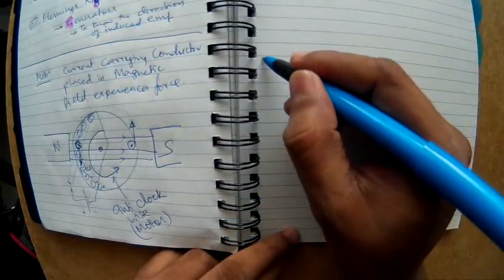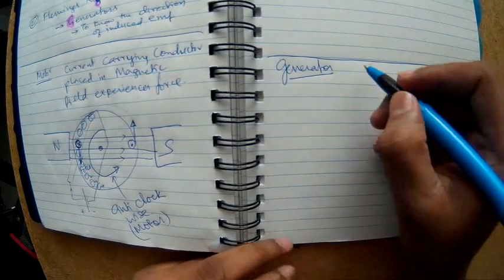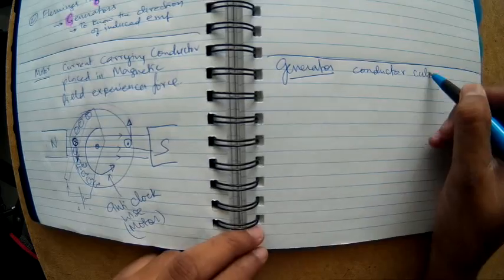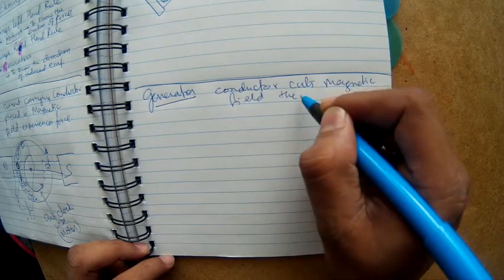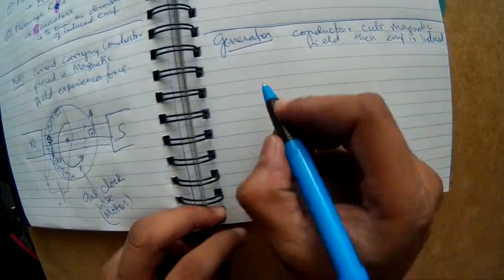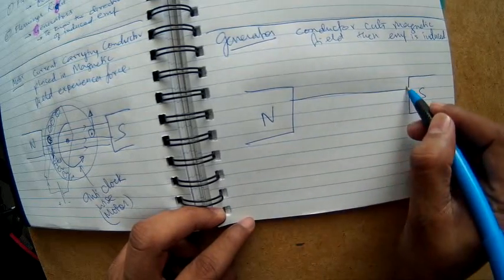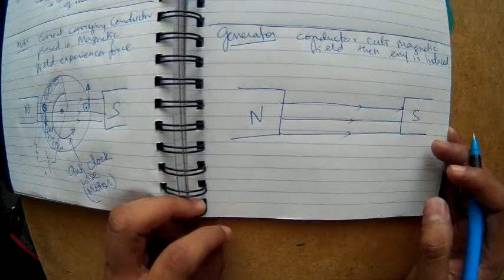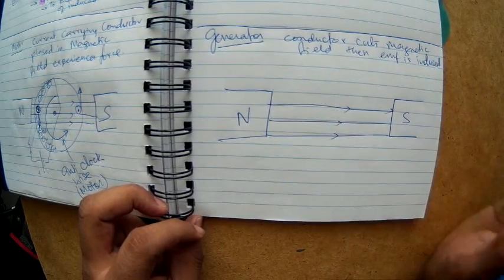Now let's look at the generator. In a generator, a conductor cuts through a magnetic field and an EMF is induced. Let's draw the setup again: north pole on the left and south pole on the right, with the magnetic field going from left to right.